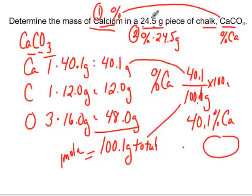We know that no matter how big or how small, it's 40.1% calcium. We know exactly how big or how small it is. We know it's going to be 24.5 grams. So we take our total sample size, and we multiply it by its percent, and we'll figure out how many grams of calcium are in here.